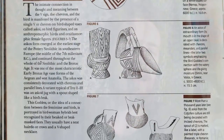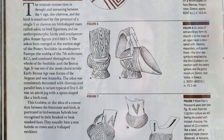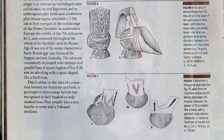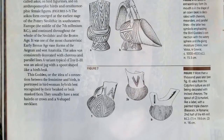The axos form emerged at the earliest stage of Neolithic pottery in southeastern Europe, the middle of the seventh millennium BC, and continued throughout the Neolithic and Bronze Age. It was one of the most characteristic early Bronze Age vase forms of the Aegean and west Anatolia, consistently decorated with chevrons and parallel lines. A variant typical of Troy 2–3 was an axoid jug with a spout shaped like a bird's beak.